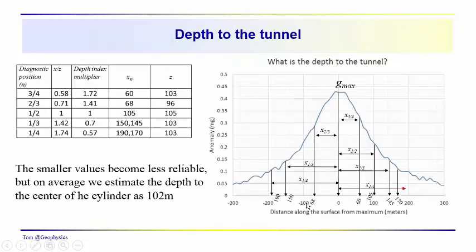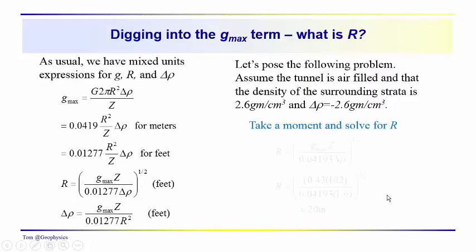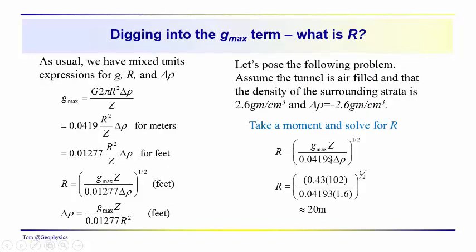And, hopefully, likewise, you kind of understand what we've done here in terms of using the different diagnostic positions, where X drops off to 3/4, 2/3, 1/2, 1/3, 1/4. We get the depth index multipliers. We're using averages where the differences are quite significant. And then, once we figure out what Z is, it's a simple matter to figure out what R is, or delta rho, depending on what we feel we know.